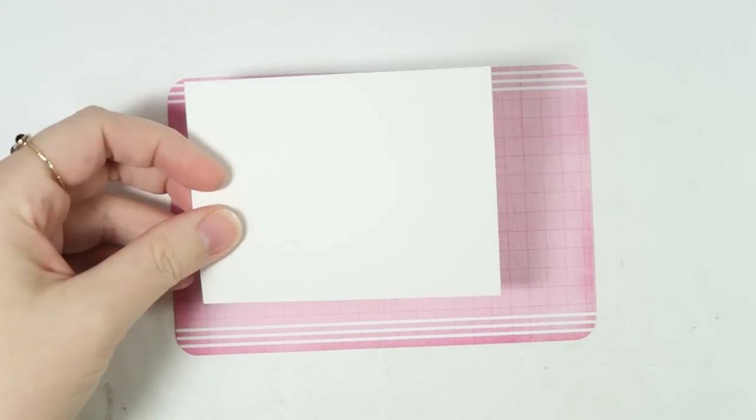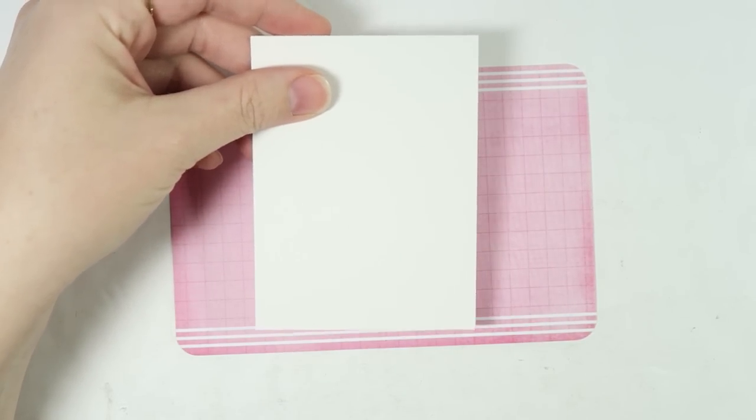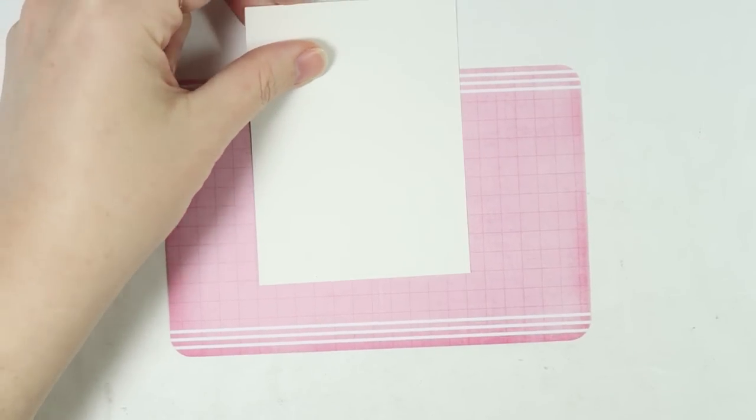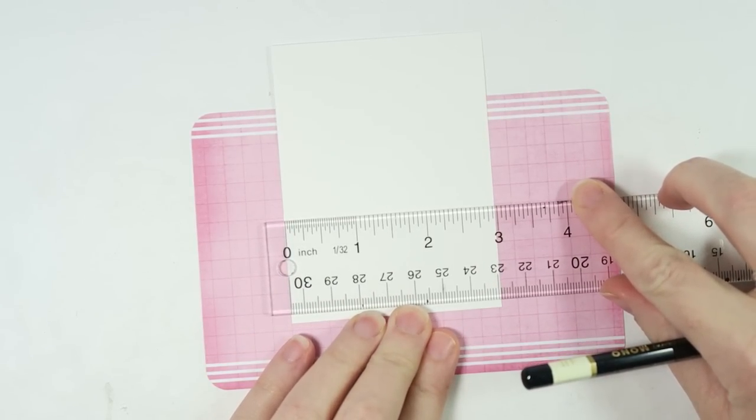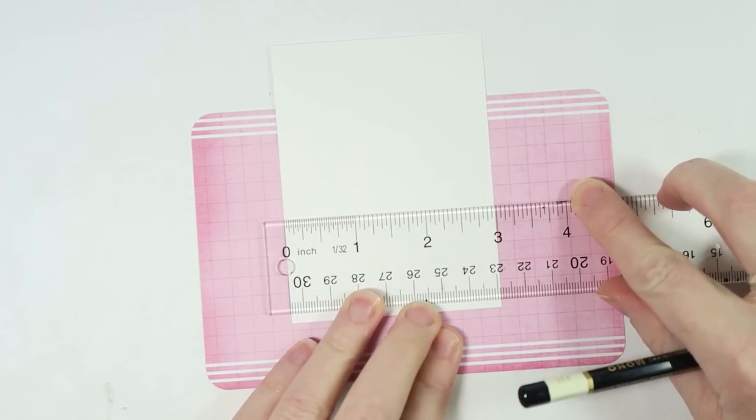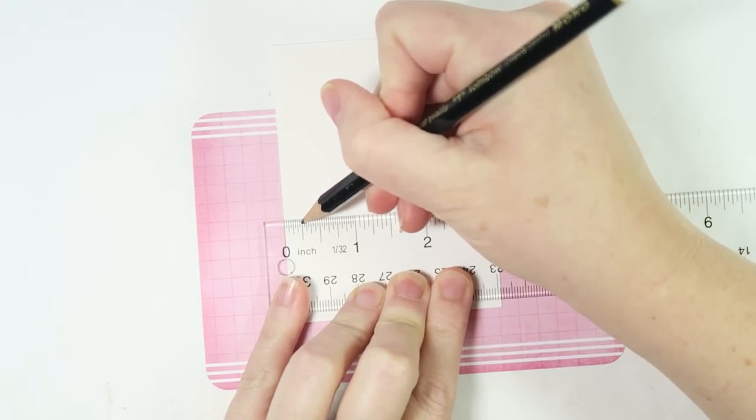To get started with the template, turn your template so that it is a portrait orientation. From the side, you want to measure in three eighths of an inch. It doesn't really matter where you do this because we're going to do it a few times.